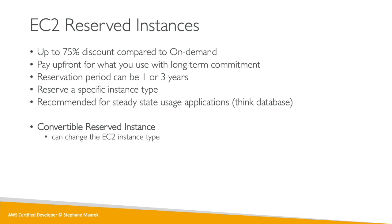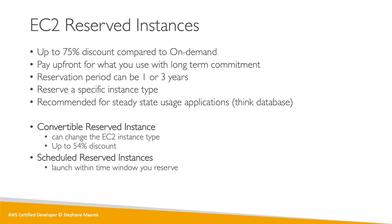There's a slight variation called convertible reserved instances, where we can convert and change the EC2 instance type. It offers a slightly lower discount because of that added flexibility — still very nice if you need to reserve but aren't sure exactly what instance type you'll need during the year. Scheduled reserved instances are for when you know you'll need an instance on, say, every Saturday night during a football game, but not the rest of the time.